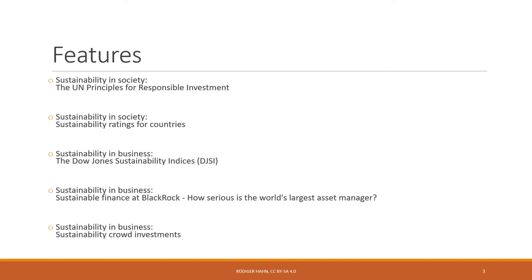This chapter includes several features. The first, on sustainability in society, covers the United Nations Principles for Responsible Investment — a high-level initiative in sustainable finance. A second feature on sustainability in society addresses sustainability ratings of countries, showing that not only companies but also countries and other objects can be rated.